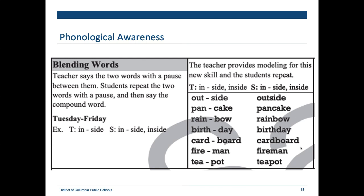We might also blend some words — for adults it's a lot like compound words, but with children it's done by sound. You might say 'I have the two words out and side — when you put them together, what word do you have?' And they would say 'outside.' Pan and cake — pancake. Fire and man — fireman. It seems easy as an adult, but it does take real skill for students to put these sounds together.